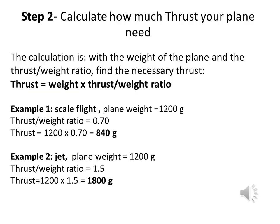Step 2: Calculate how much thrust your plane needs. Thrust equals weight multiplied by thrust-to-weight ratio. Example 1 — Scale flight: plane weight equals 1,200 grams, thrust-to-weight ratio equals 0.70, so thrust equals 1,200 × 0.70 = 840 grams. Example 2 — Jet: plane weight equals 1,200 grams, thrust-to-weight ratio equals 1.5, so thrust equals 1,200 × 1.5 = 1,800 grams.